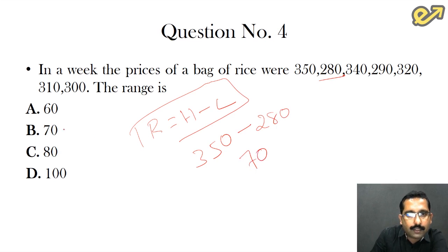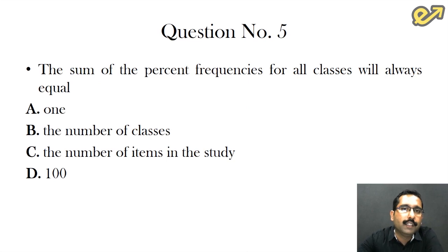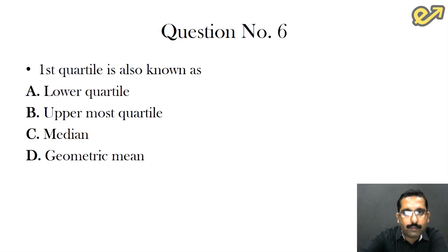Let's move on to the fifth question. The sum of percent frequencies for all classes will always be equal to? Now it is very simple. The moment we use the word percent, it is always equivalent to 100. So the answer here is option D, that is 100.